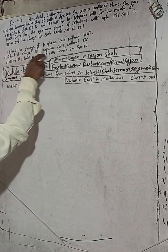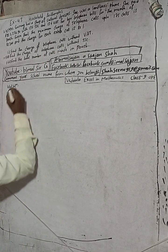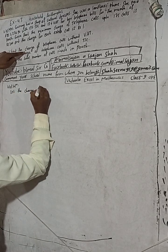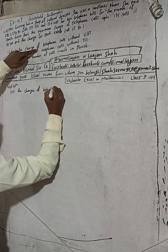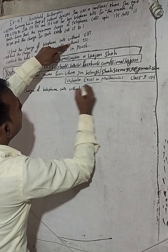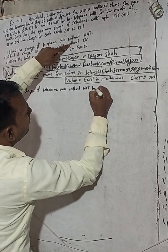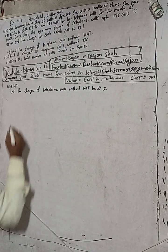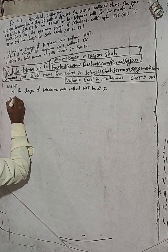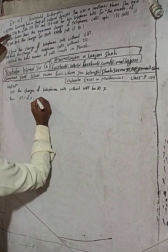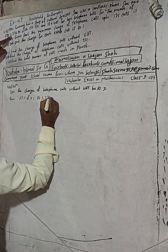Let the charge of telephone calls without VAT be x. Then we can directly write: 113% of x is equal to Rs 1,276.90.